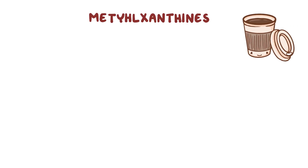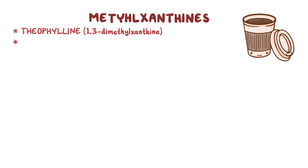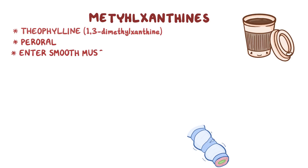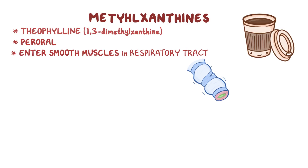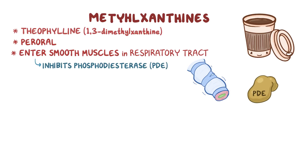Moving on, the next group of bronchodilators are the methylxanthines. Caffeine actually belongs to this family of compounds. But for asthma treatment, the most common medication is theophylline, also known as 1,3-dimethylxanthine. This medication is taken peroral and can enter the smooth muscles in the respiratory tract. Once there, theophylline inhibits the enzyme phosphodiesterase (PDE), which converts cAMP into an inactive form called 5'-AMP. This increases the level of cAMP within the cell and triggers smooth muscle relaxation.